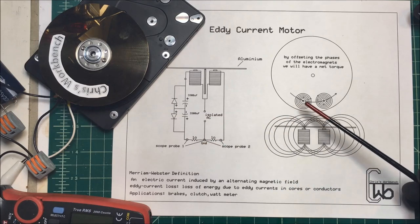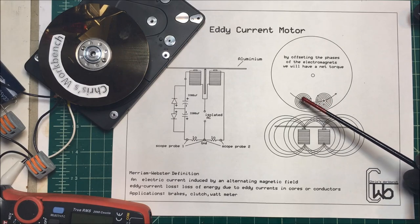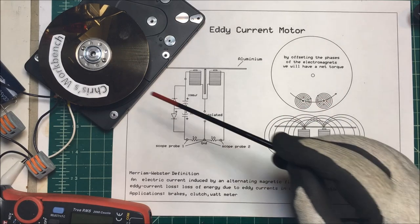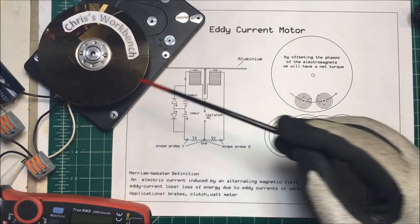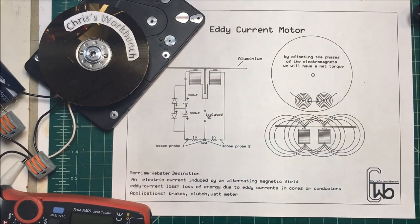Most of the time we're trying to get rid of eddy currents and that's why we use laminated cores in motors and transformers, but in this case I'm trying to induce some current into the disc here and create a magnetic field.